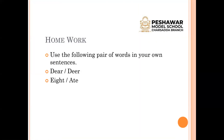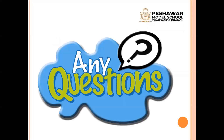Now for homework: use the following pair of words in your own sentences. The first pair is 'dear' and 'dear' — one means a beloved person and the other means an expensive or costly thing. Write the English meaning, the Urdu meaning, and use both in sentences. The second pair is 'eight' and 'ate' — E-I-G-H-T is the mathematics number eight, and 'ate' — A-T-E — is the past participle of 'eat.' Use both in sentences.